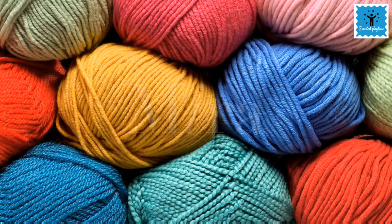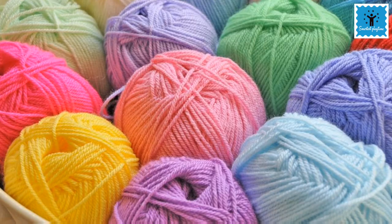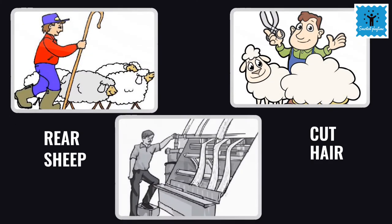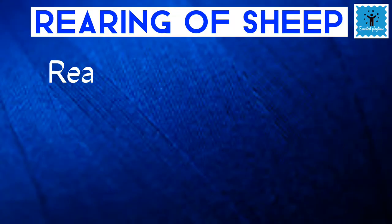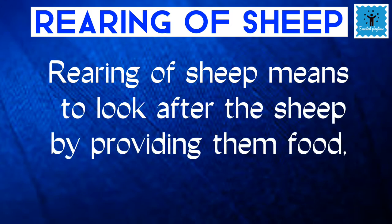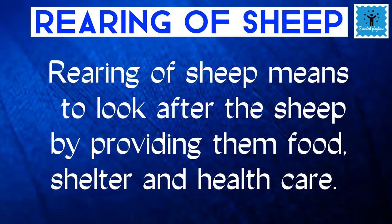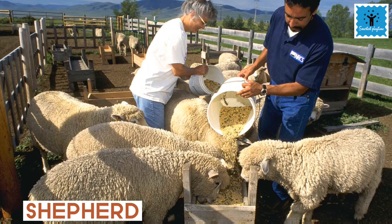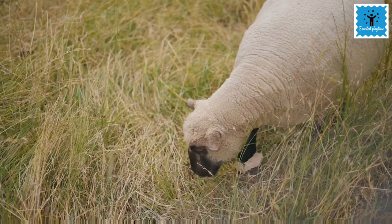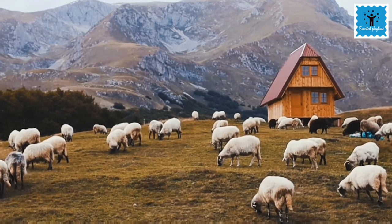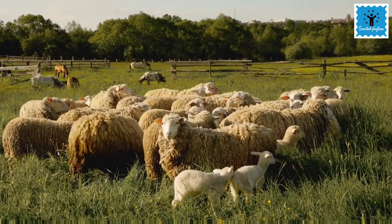Wool commonly available in the market is sheep wool. For obtaining wool, sheep are first raised, their hair is cut, and then the hair is processed into wool. Looking after the sheep by providing food, shelter, and health care is called rearing of sheep, and the person who looks after the sheep is called a shepherd.